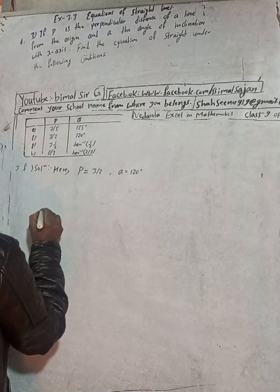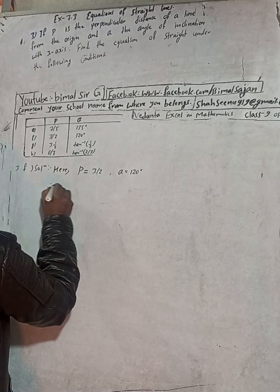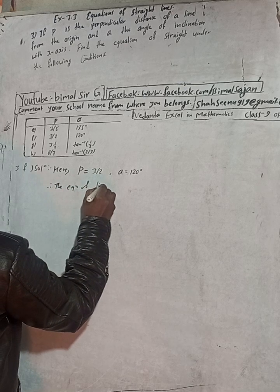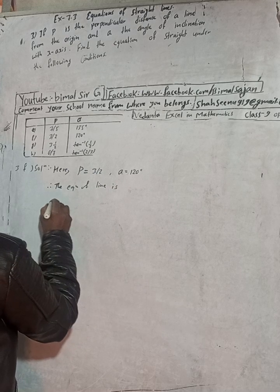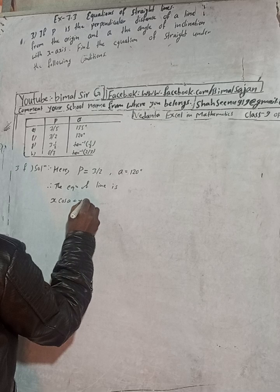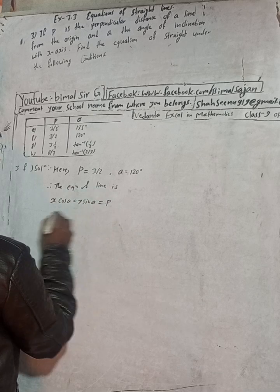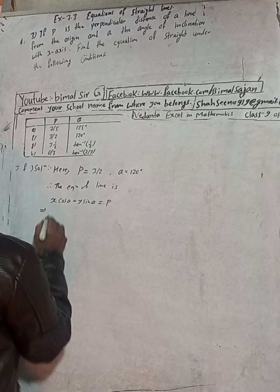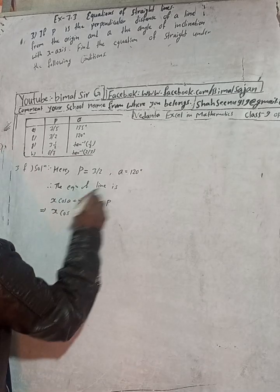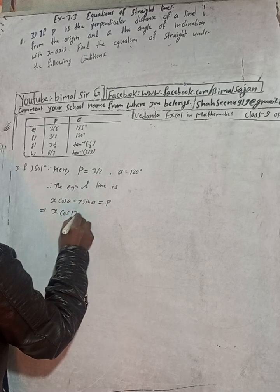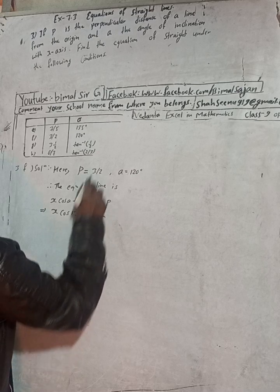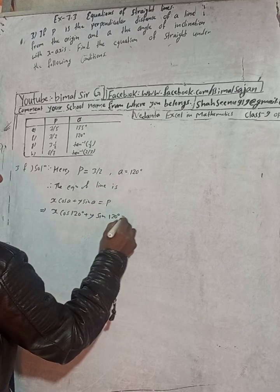Therefore, the equation of the line is x cos alpha plus y sin alpha is equal to p. So substituting, x cos 120 degrees plus y sin 120 degrees is equal to p.